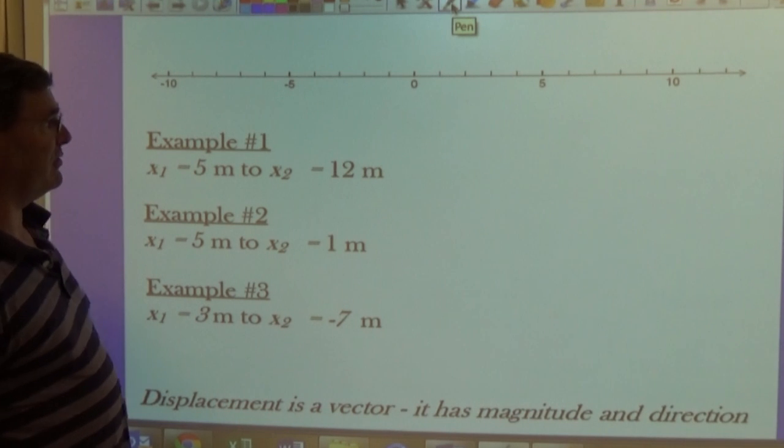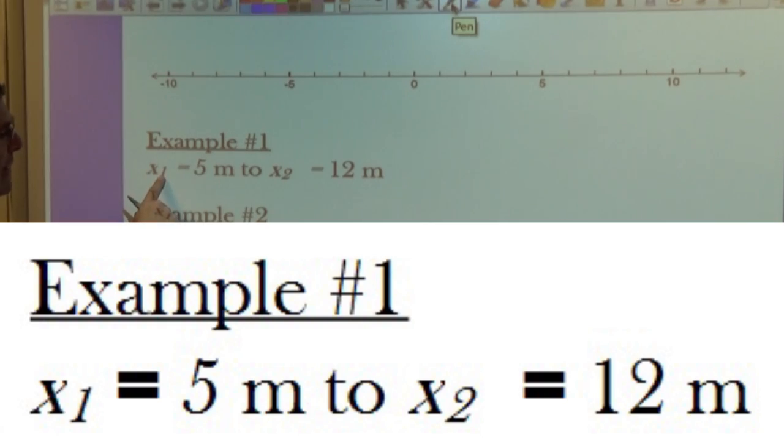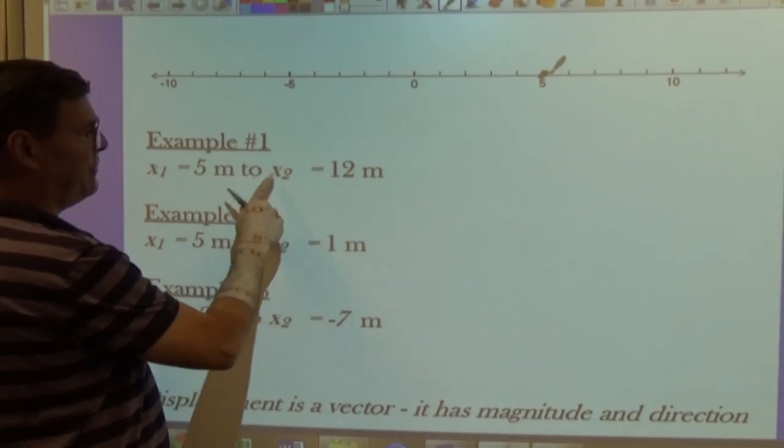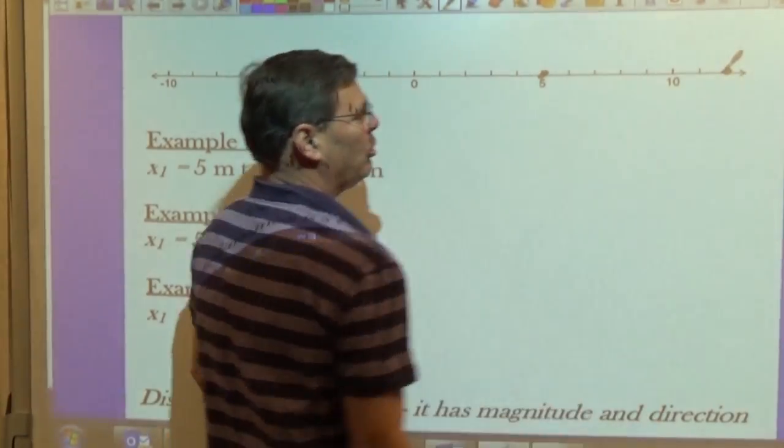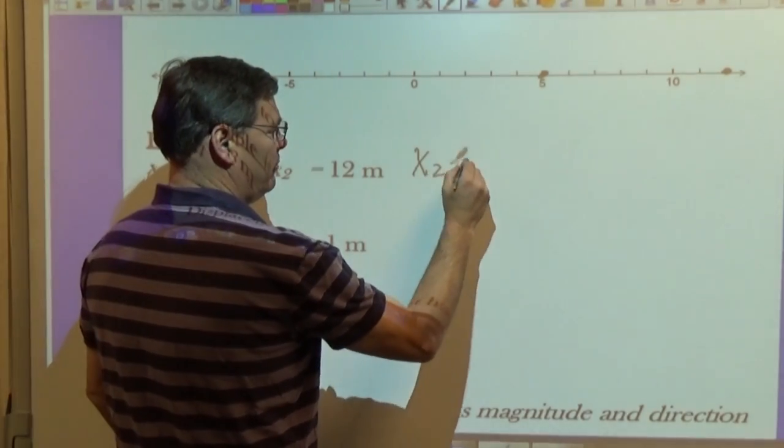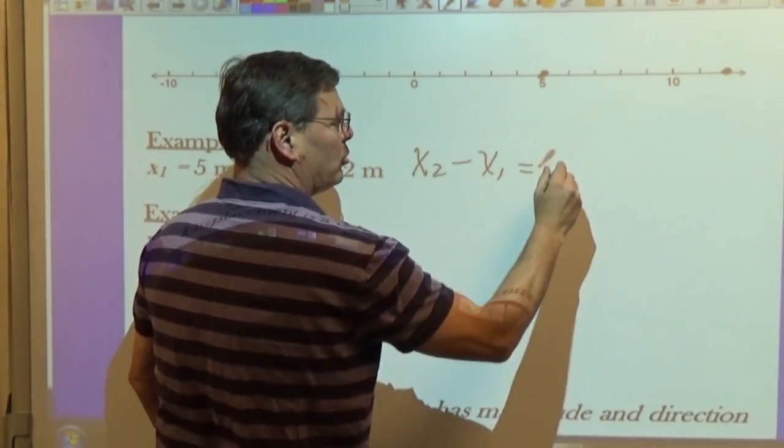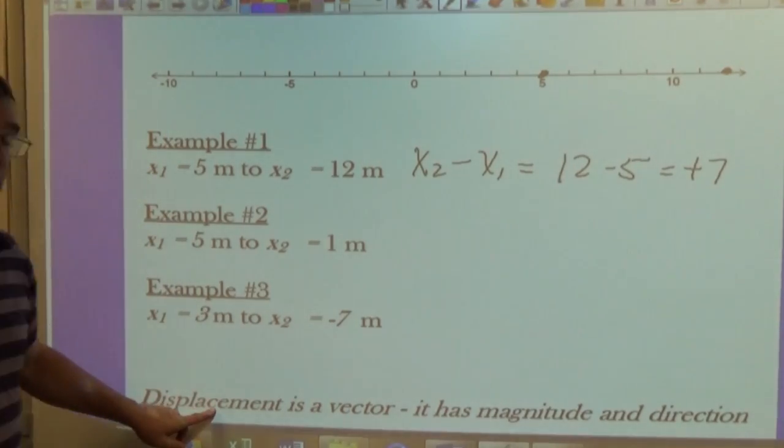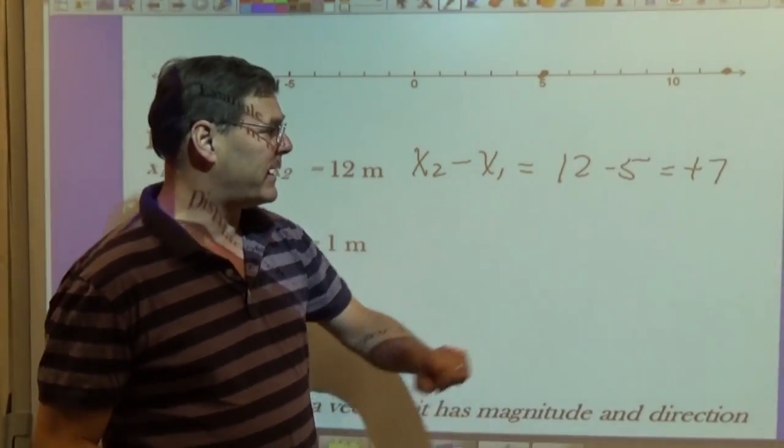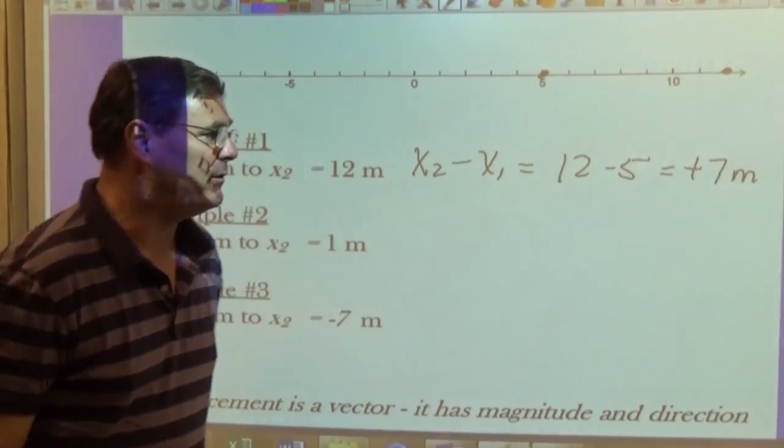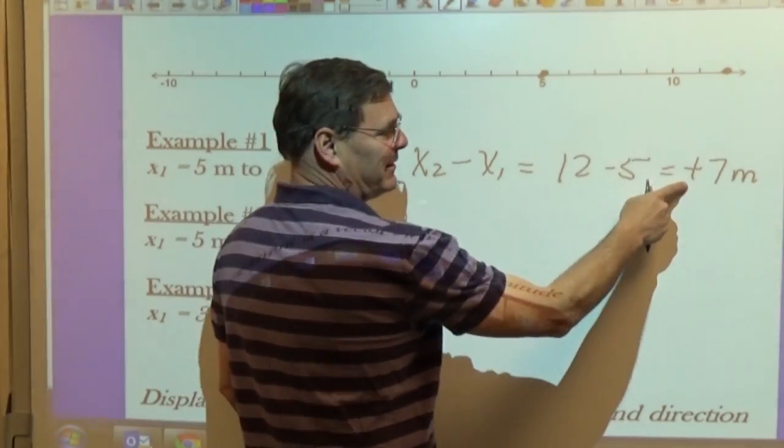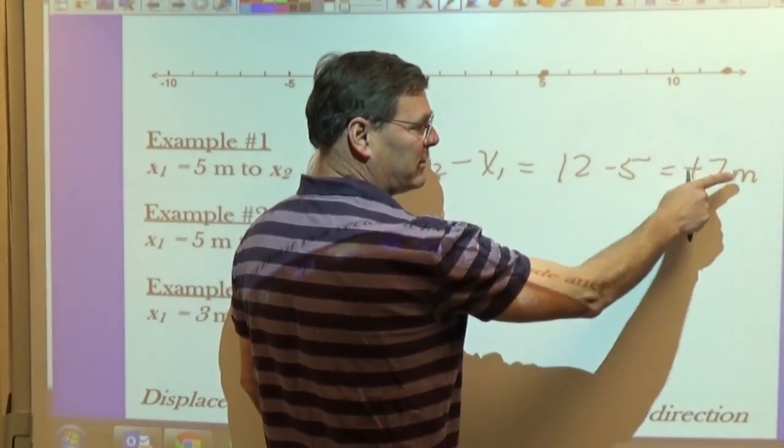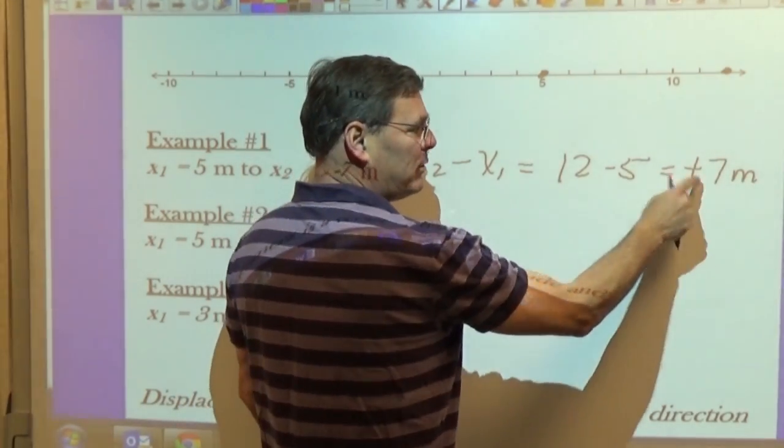Let's look at a couple of examples of displacement. For our first example, our initial position, our first position will be at 5 meters, and we're going to move from 5 meters to 12 meters. So what is our displacement? Well, x2 minus x1, so that would be 12 minus 5 equals plus 7. Displacement is a vector. It has both magnitude and direction. So the magnitude of my displacement is 7 meters, and the direction of the displacement is in the positive direction. So I started here and went there, so I have moved in the positive direction. So my displacement is positive 7, where 7 is the magnitude and plus is the direction.